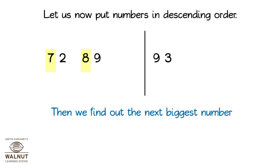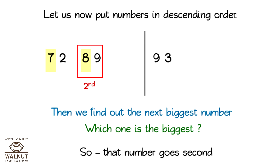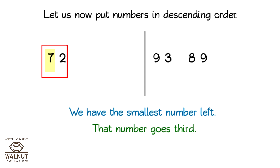Then, we find out the next biggest number. Which one is the biggest? 89. So, that number goes second. We have the smallest number left. That number goes third.